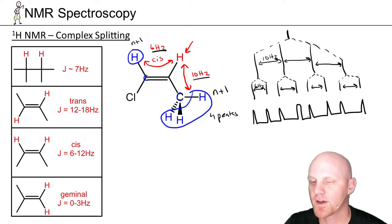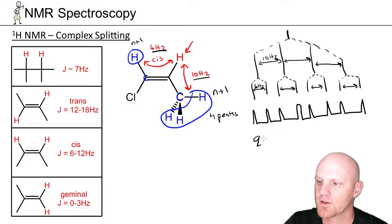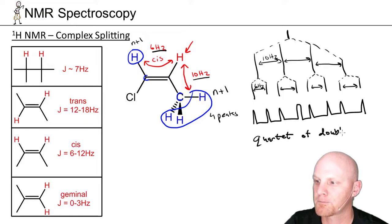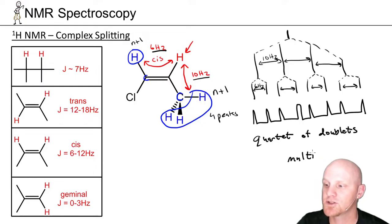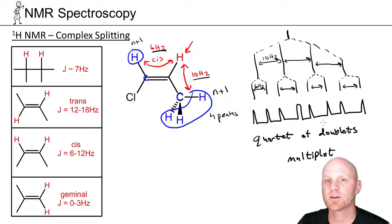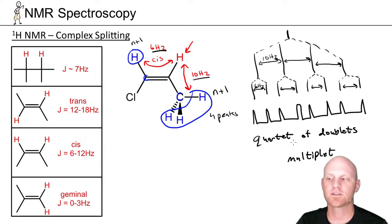These eight peaks would all be roughly equal in height, and we'd call this a quartet of doublets — or some people might just use the term multiplet. When you get a lot of peaks with complex splitting, especially if they're not all resolvable and you see some overlap, people will use the word multiplet. Technically, multiplet doesn't just mean a lot of peaks — it means a lot of peaks that aren't all necessarily distinguishable with complex splitting. Using the word multiplet definitely implies complex splitting.